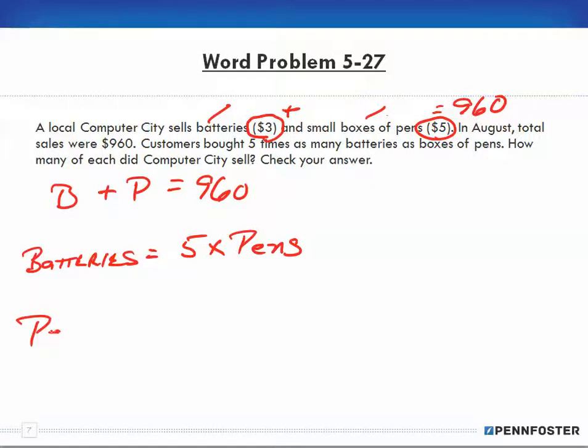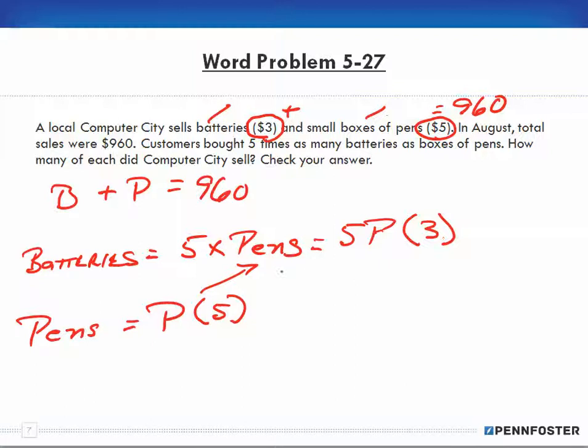We sell batteries for $3 and pens for $5, so we have to take into consideration the difference in value of the batteries and pens to figure out when we add them both together to end up getting 960. Our relationship says that customers bought five times as many batteries as pens. We can set pens as the variable P since we don't know how many pens we have.